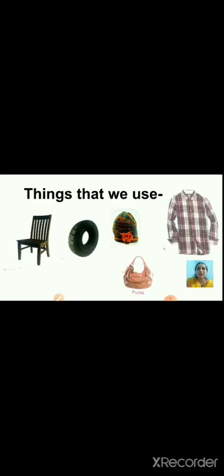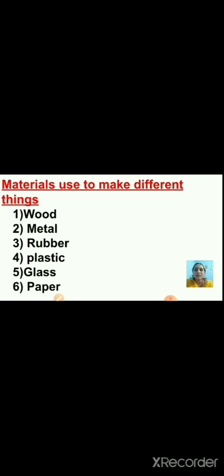These things that we use in our day-to-day life — we use several things in our daily life. They may look and feel different. Some are hard and some are shiny. Some are hard and rough. Some are soft and can be stretched. They are different because they are made of different materials: wood, metal, rubber, plastic, glass, and paper. These are some common materials used to make different things.